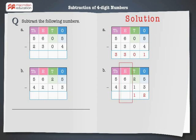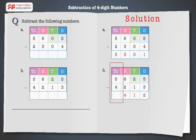Next, subtract the hundreds — 6 minus 2 is equal to 4. Finally, subtract the thousands — 5 minus 4 is equal to 1.